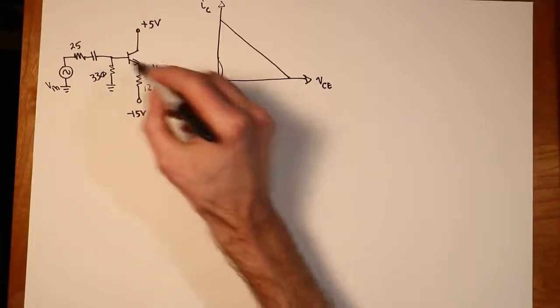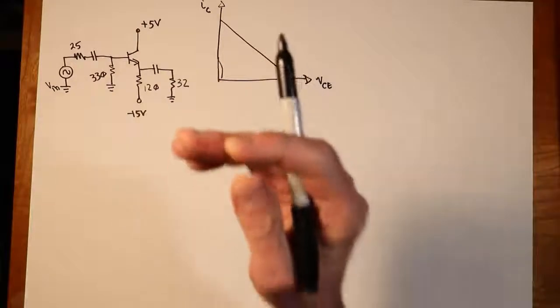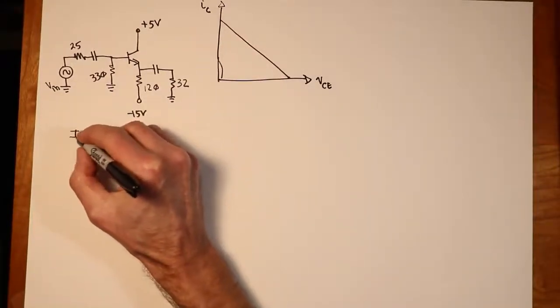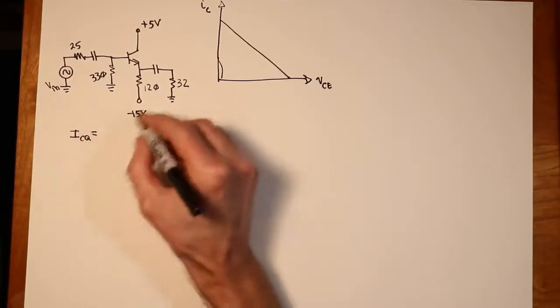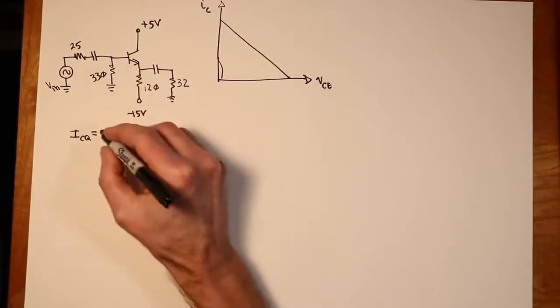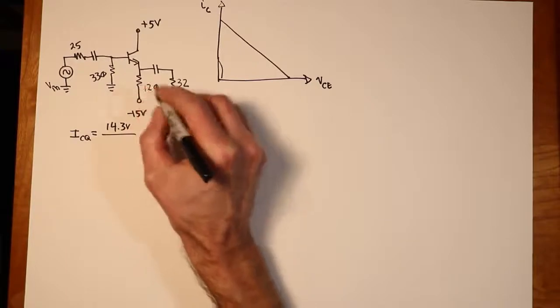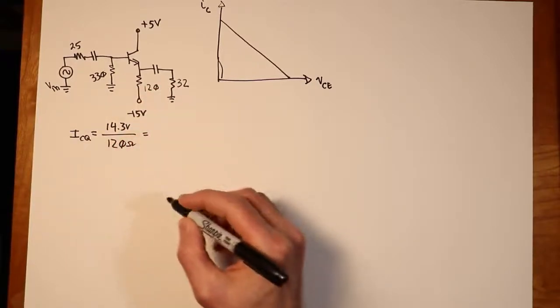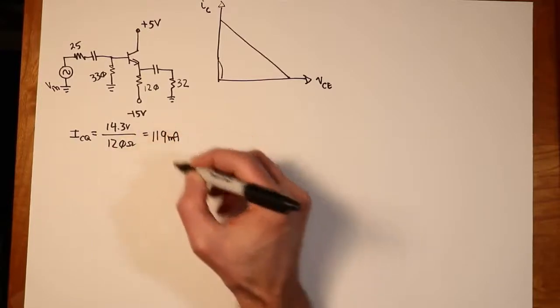Remember that the capacitors are opens for DC. So our emitter current, which is of course the same as our collector current, roughly speaking, is going to equal that potential minus the 0.7. In other words, 14.3 volts sitting across the emitter resistor of 120 ohms. And that will get us 119 milliamps.